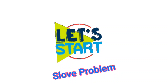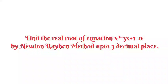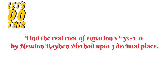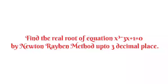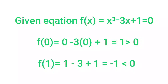Let's try to solve some problems. First problem: find the real root of the equation x³ - 3x + 1 = 0 by Newton-Raphson method up to 3 decimal places. We first try to find the nearest root x₀. Solution: we have the given equation f(x) = x³ - 3x + 1 = 0.